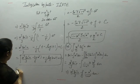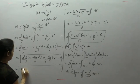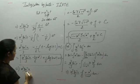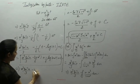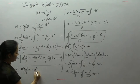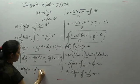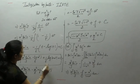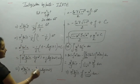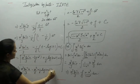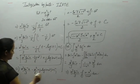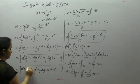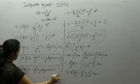Since 1 upon 6 is a constant, we can adjust it with the constant of integration c. Writing it as minus x² by 6 plus 1 by 6 log of (1 plus x²), with c minus 1 by 6 becoming another constant c₁. We can write the final answer in this form as well.